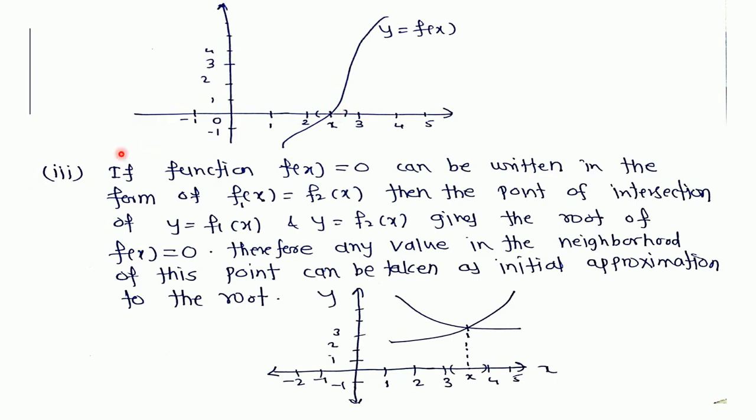Here is the third method to choose the initial guess for the problem. If our function f(x) = 0 can be written in the form f1(x) = f2(x), then the point of intersection of f1(x) and f2(x) gives the root of f(x) = 0.